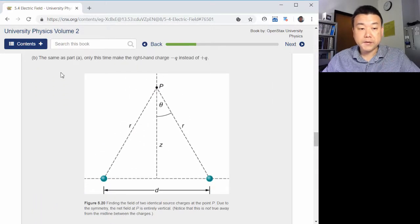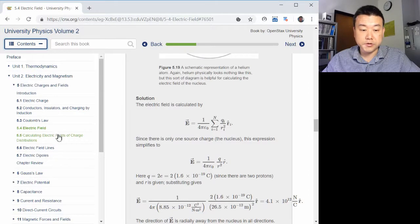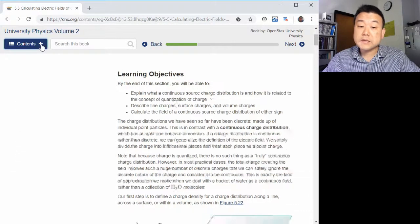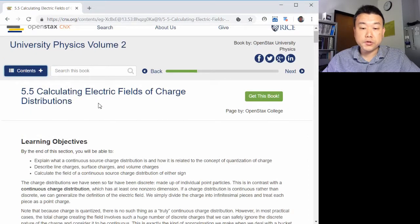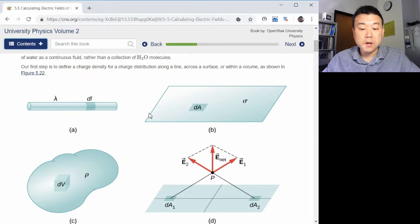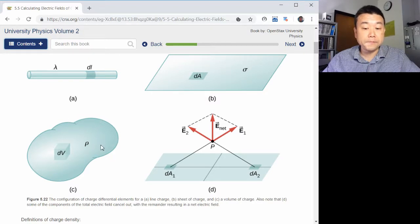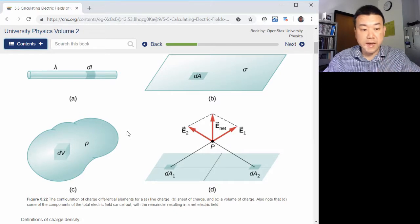Now what we want to talk about is the calculation of electric field for continuous charge distribution. So this is what we mean by continuous charge distribution. We mean something like a long line of charge, or we mean something like a large plane of charge, or we could mean something arbitrarily shaped with some charge density. For each of these situations, we assign a charge density.